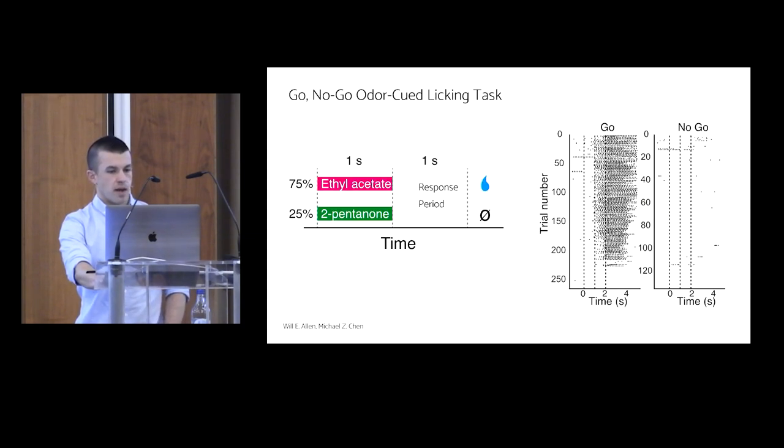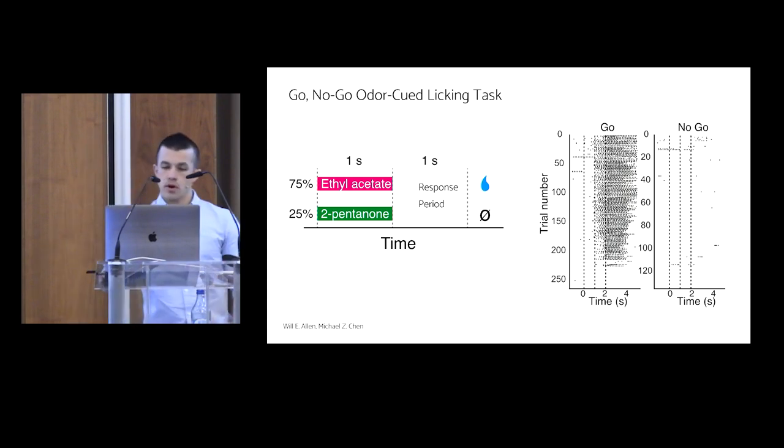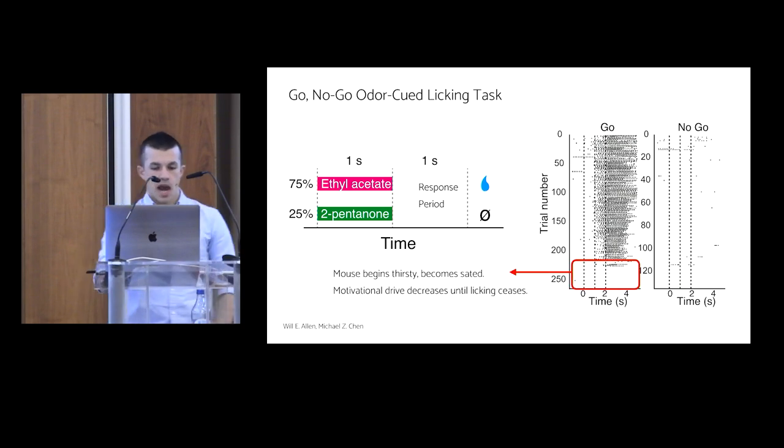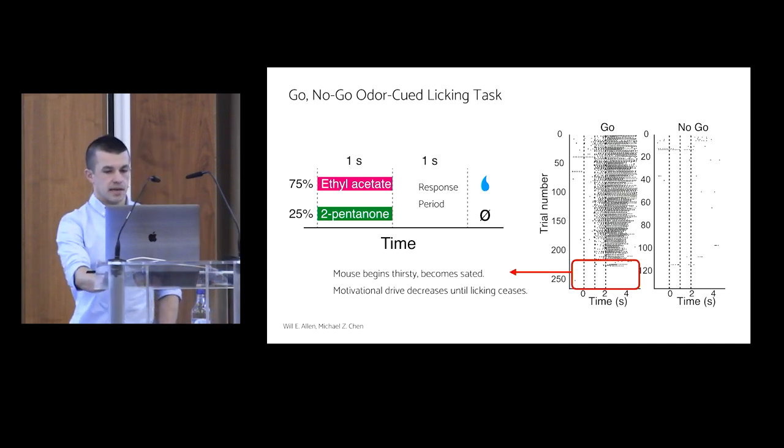So let me briefly describe the task these mice were engaged in. The mice are presented with one of two odors. If they get the go odor, they can lick during their response period for water. If they get the no-go odor, no reward is given. On the right, here is a lick raster in a trained animal. You can see it lick successfully for hundreds of go trials while it's thirsty, and then rather abruptly stops when it is sated. So this setup provides a trial-by-trial readout of motivational drive, and the neural data gives us a brain-wide picture of how this drive modulates sensory-to-motor processing throughout the brain.